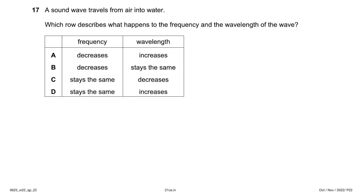A sound wave travels from air into water. What happens to frequency and wavelength? Frequency stays the same when a wave changes medium. Water is a denser medium, so the speed increases, meaning the wavelength increases. Frequency stays the same; wavelength increases. Answer: option D.